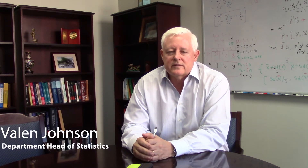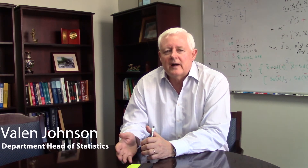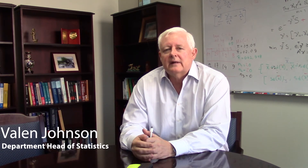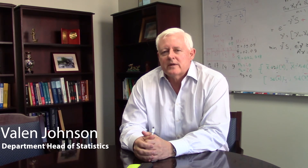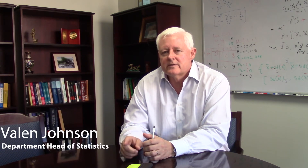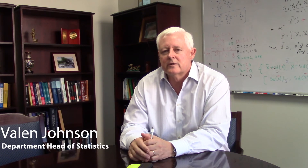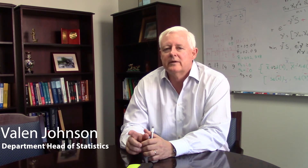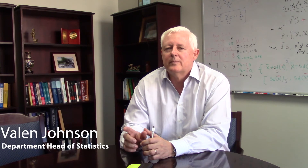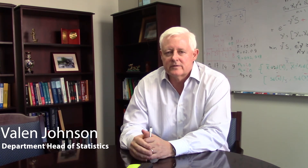What we found is that when the p-value is .05, that often doesn't really represent much evidence against the null hypothesis. The reason for that is the p-value is the probability of seeing a test statistic more extreme than the test statistic that you observed — it's not the probability that the null hypothesis is true. A lot of people interpret a p-value to be the probability that the null hypothesis is true.